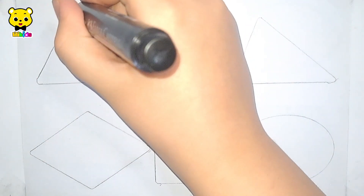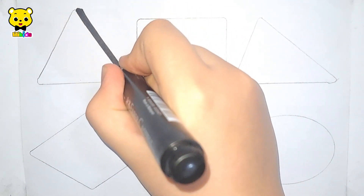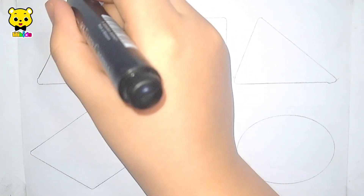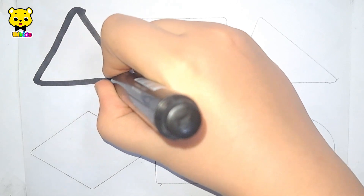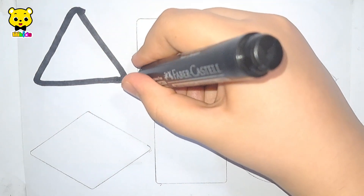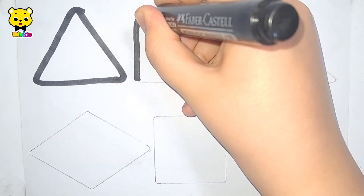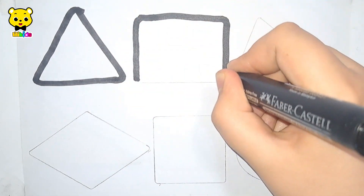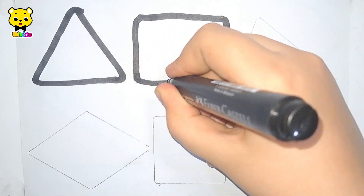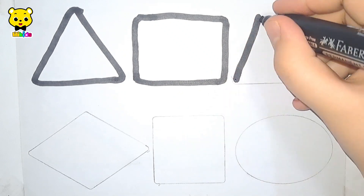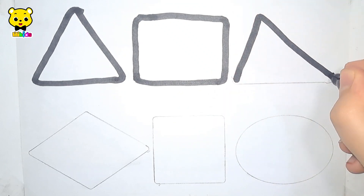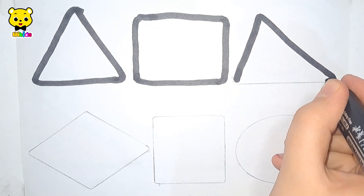Let's learn to draw some 2D shapes. Triangle. Rectangle. Triangle.